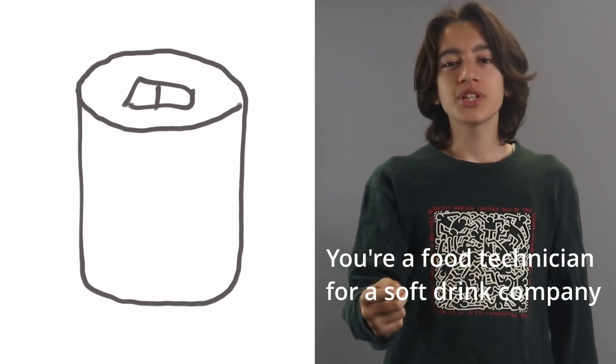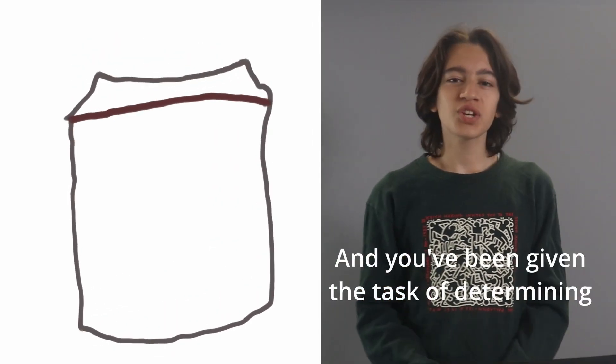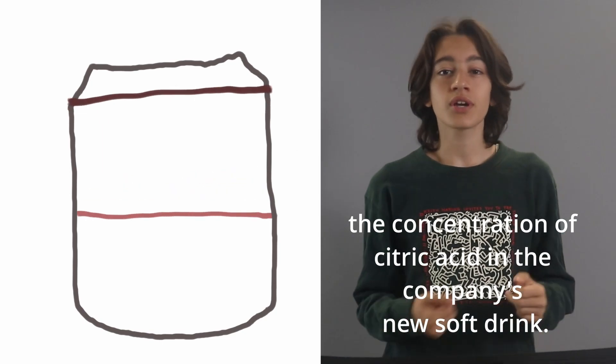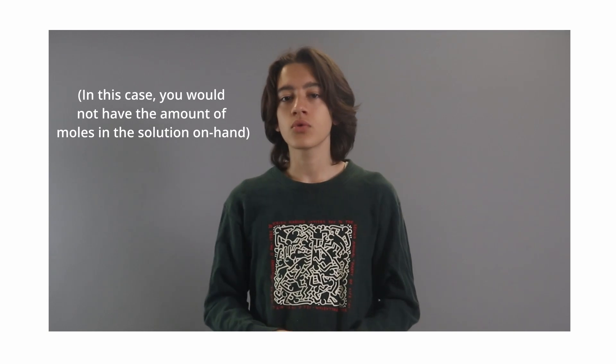Picture this: you're a food technician for a soft drink company and you've been given the task of determining the citric acid concentration in the company's new soft drink. How exactly do you get the concentration of a substance? It's not as easy to record as a boiling point or surface area or volume. Well, the answer is pretty simple — we use a process known in chemistry as titration.